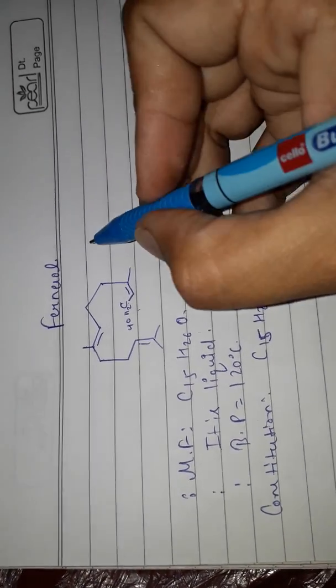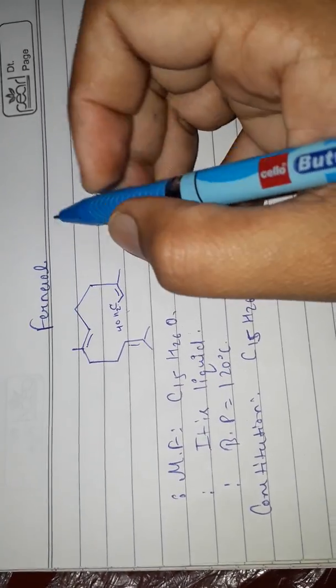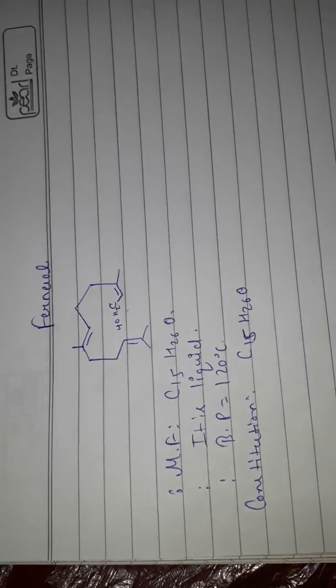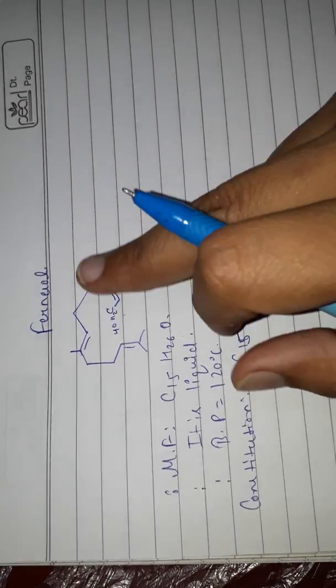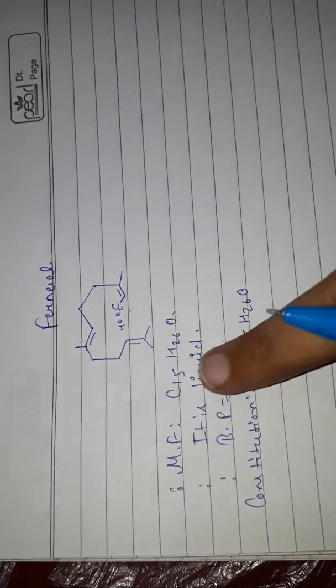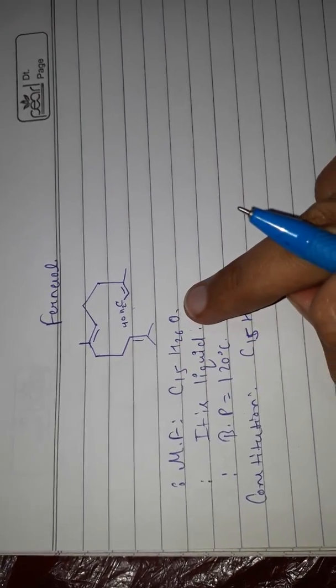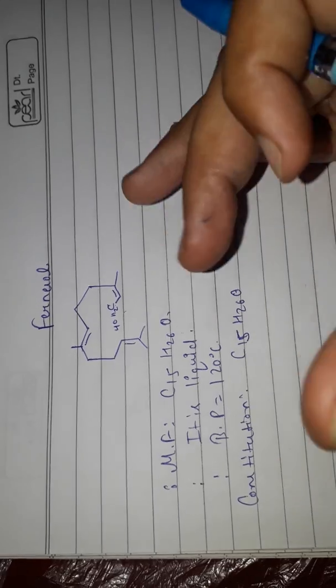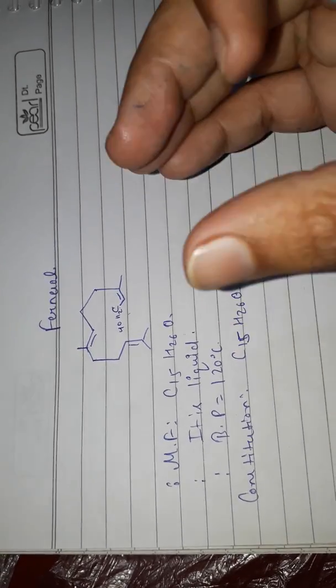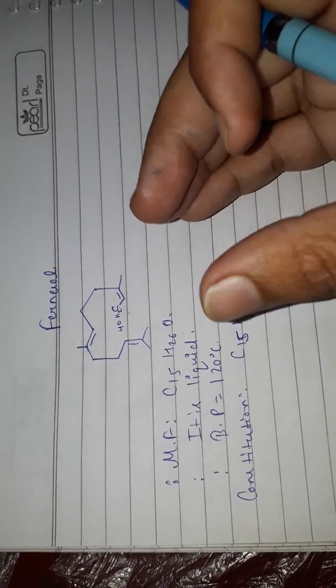Welcome to MSC Chemistry. Today's topic is farnesol structure. Farnesol has the molecular formula C15H26O and is found in liquid form with a boiling point of 120 degrees.